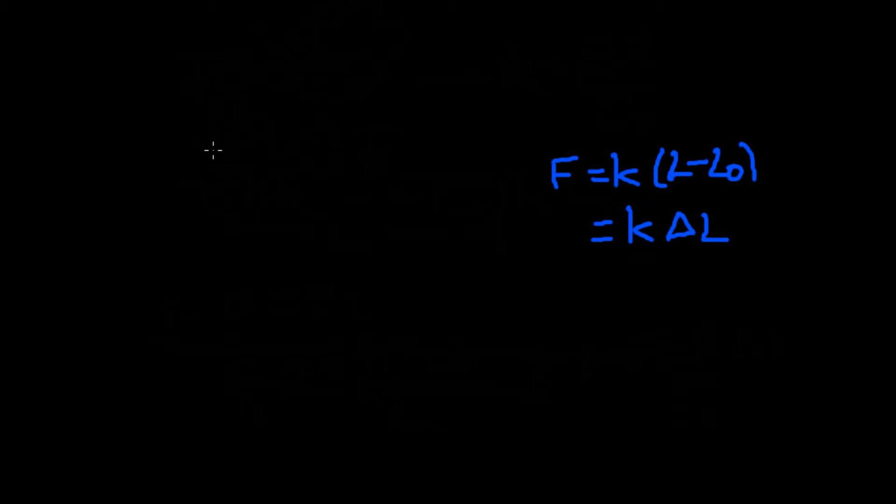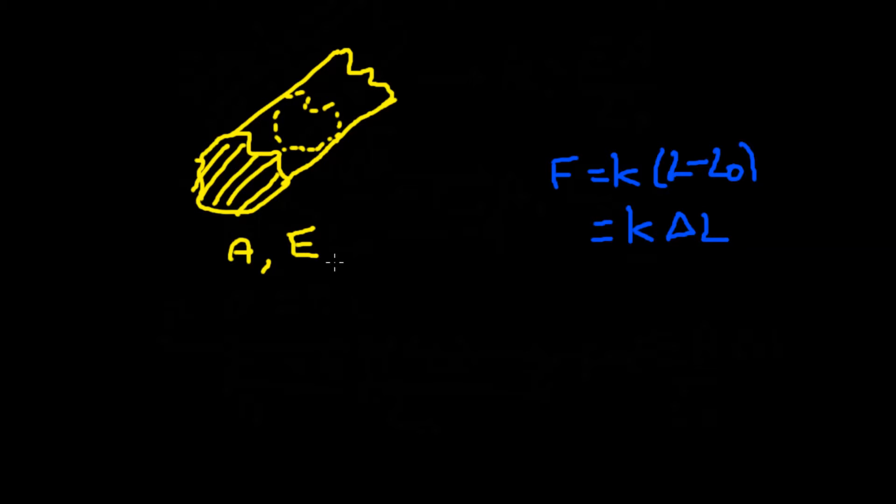So let's move on to the bar. So the bar can be of any weird cross-sectional area, but the cross-sectional area has to be constant throughout. So if you take any cross-section, it has the same kind of shape. And so this cross-sectional area is A and the elastic modulus of the material, this is a homogeneous material, is E and the length of the bar is L0.